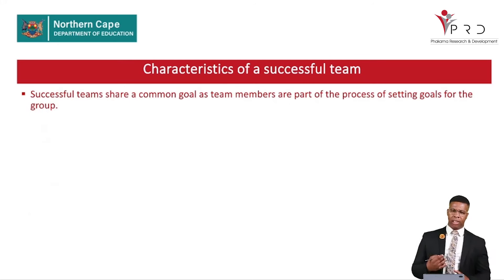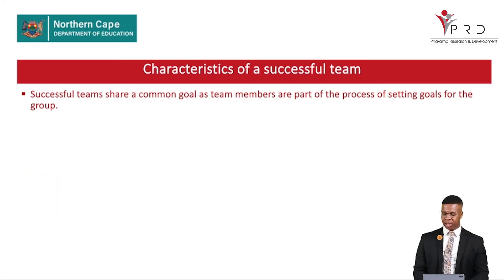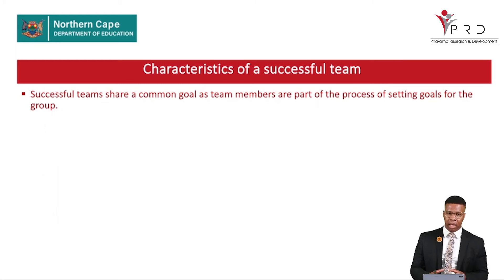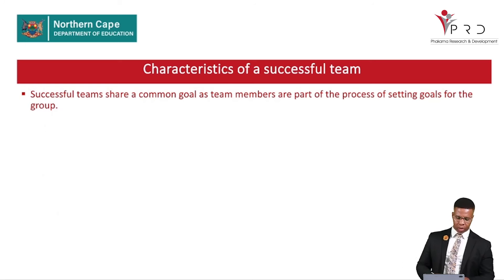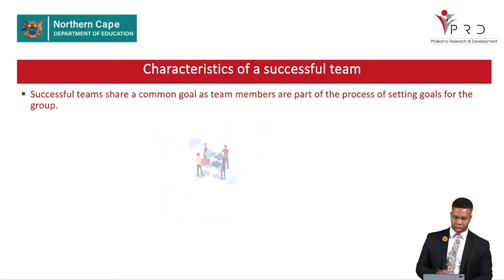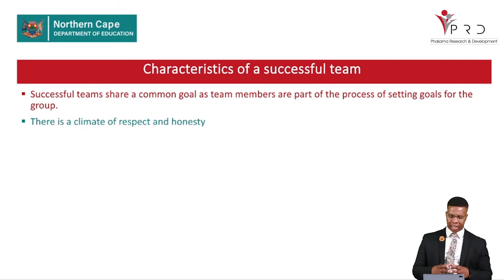The characteristics of a successful team: successful teams share a common goal, as team members are part of the process of setting goals for the group. A team's goal cannot be set by one member alone — the group involved in doing the work must all be part of setting the objective together. There is also a climate of respect and honesty in a successful team; members must be honest with each other so they can learn and develop from their mistakes.